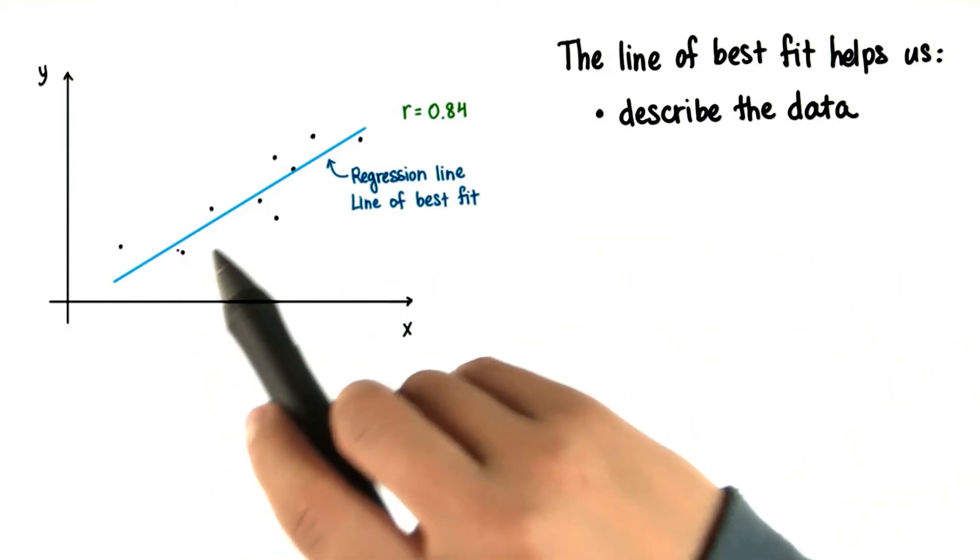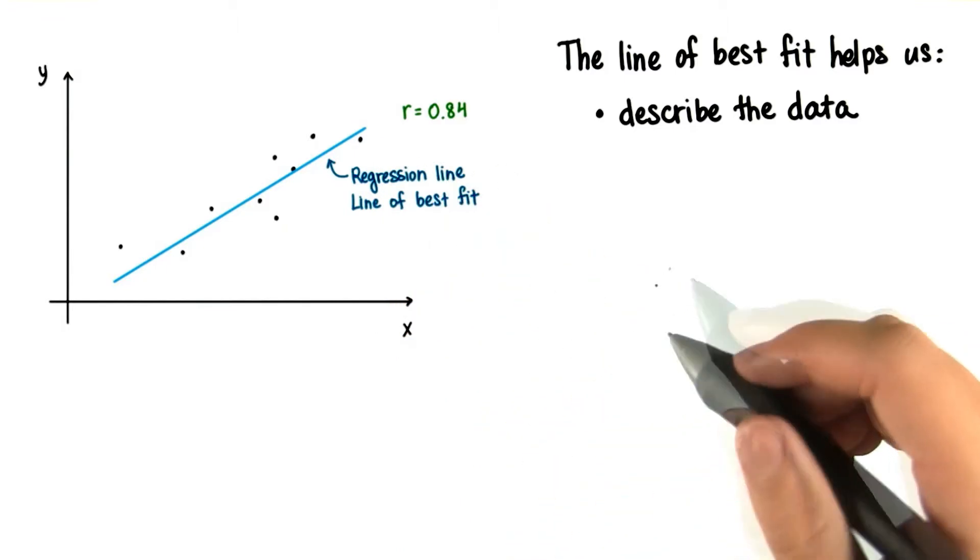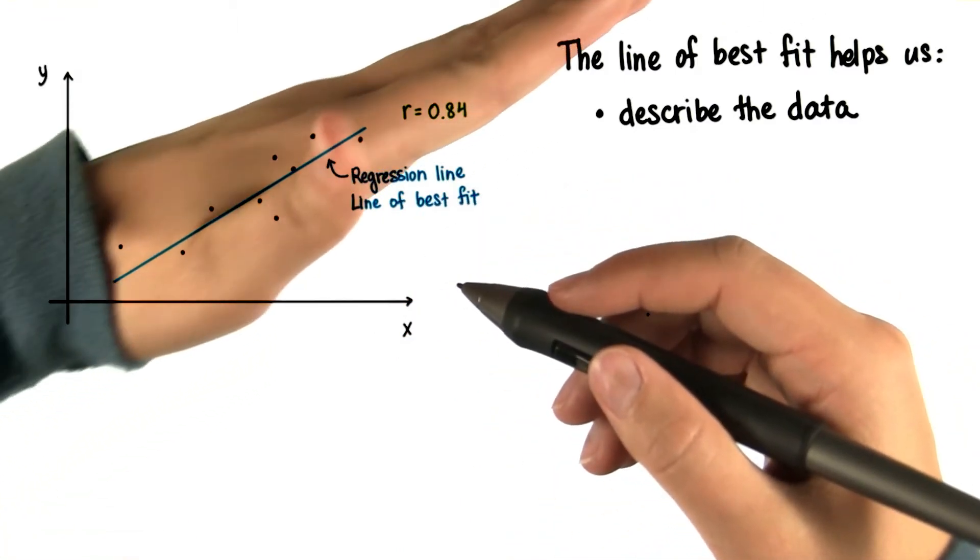In this lesson, we'll only focus on linear relationships, meaning relationships that follow a linear trend in one direction.